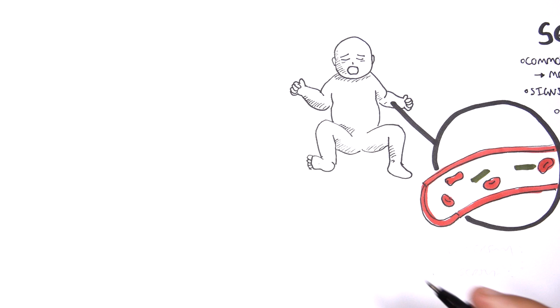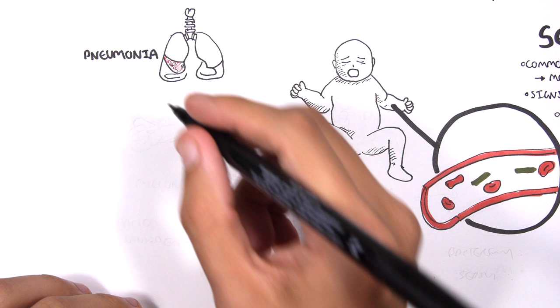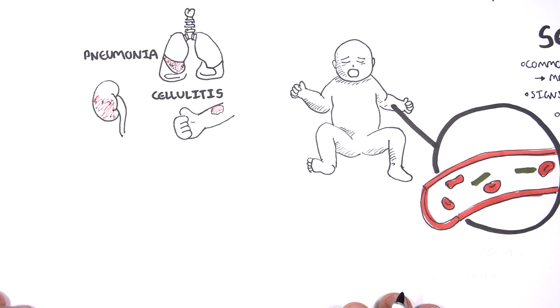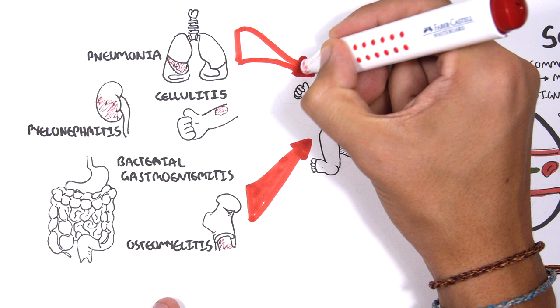Sepsis is usually secondary to a bacterial infection somewhere in the body. The primary infection occurs in the lungs causing pneumonia, skin causing cellulitis, urinary tract infection from pyelonephritis, gastroenteritis, or osteomyelitis from the bones. All these primary infections can lead to dissemination of bacteria causing sepsis.